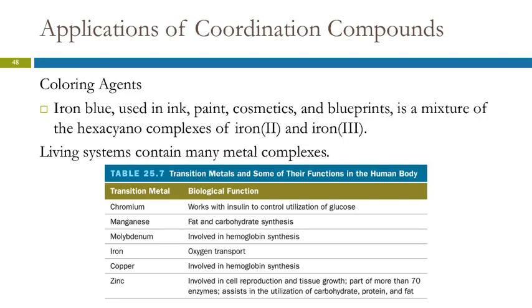There are a lot of metal complexes in living systems. Here are some examples. Chromium works with insulin. Manganese works with fat and carbohydrate synthesis. Most important one here is iron. Iron works with hemoglobin to transport oxygen in your blood.